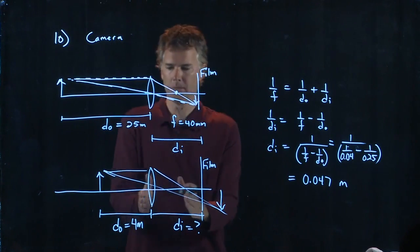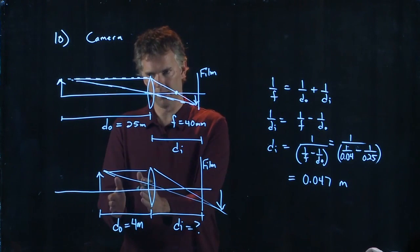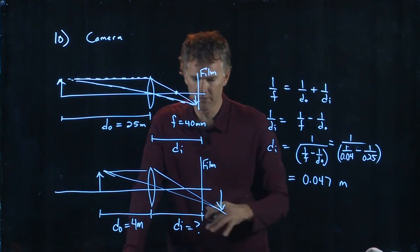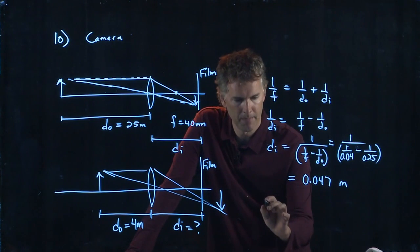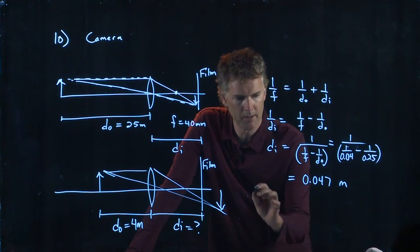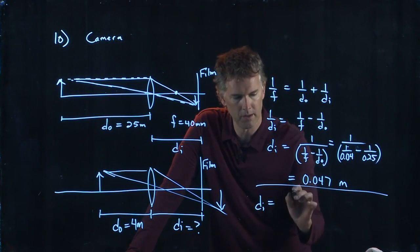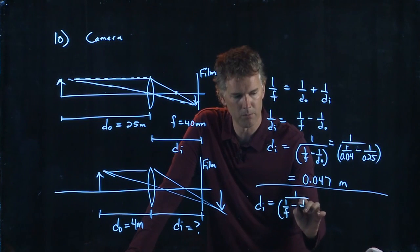And so in fact, I need to move that lens further away from the film. But since they give us all those numbers, we can just calculate it. We know DI in this case. DI is going to be this thing. 1 over, 1 over F minus 1 over DO.